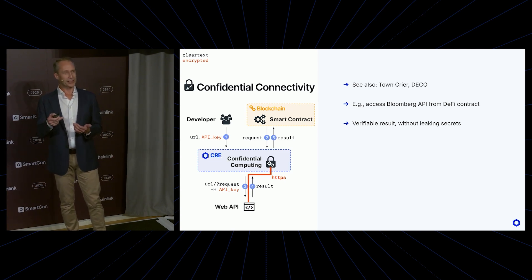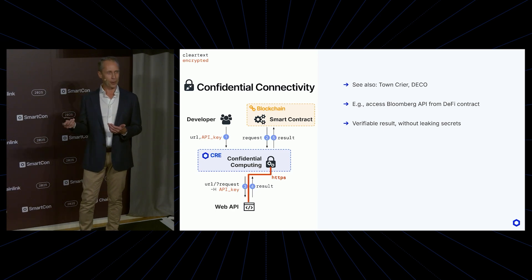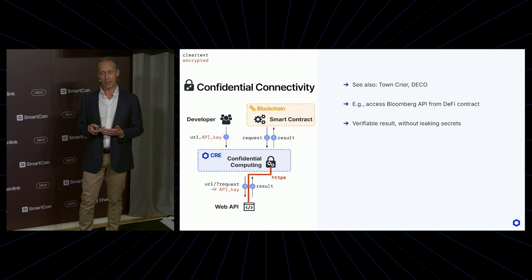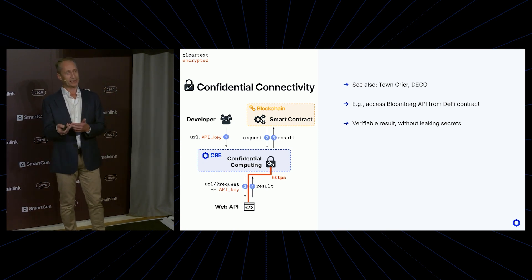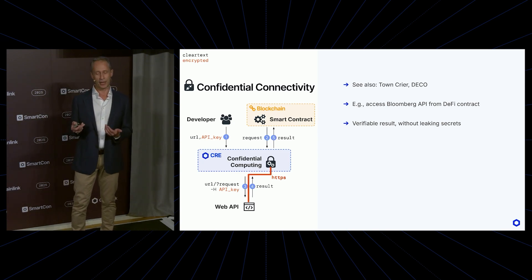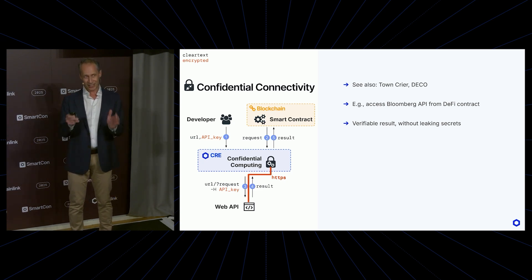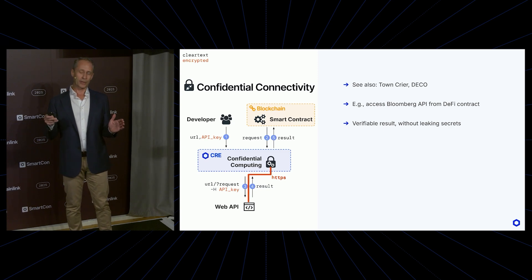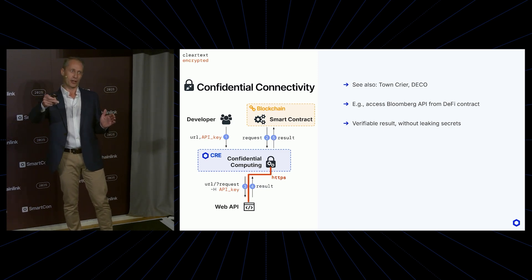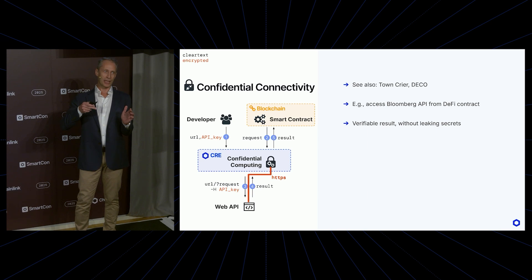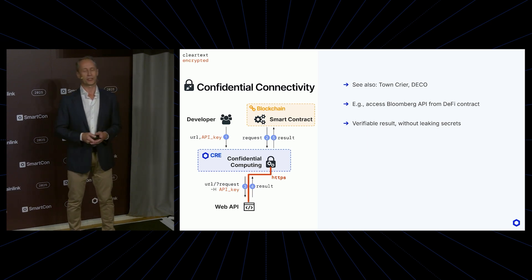You probably don't even want to put that on all of the nodes of a Chainlink network, because all of those nodes would get insight into the API key. What you can do with Chainlink Confidential Compute is encrypt that API key and send it to the CRE, so that when the smart contract needs to make a call out to the Bloomberg API, it charges an enclave to decrypt the API key inside the secure enclave.